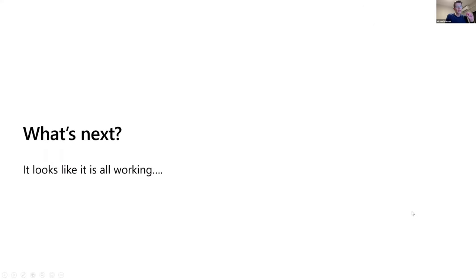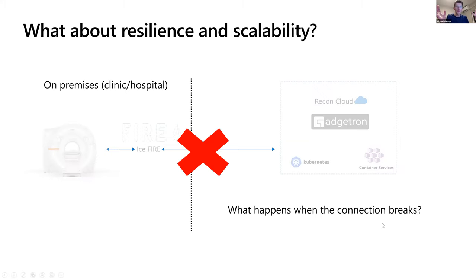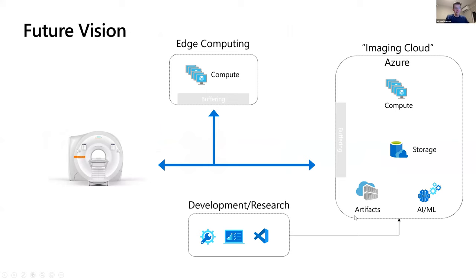One quick note on what's next: it sounds like it's all working, but when we're honest about it, this is still pretty brittle. For instance, if the connection breaks even for a short period of time, it doesn't turn out so well — typically your reconstruction fails. What we're working on is the next generation of this, where you have some compute in the cloud, some compute on the edge, intelligent buffering, and resilient connections so that your scanner can come and go without things falling apart.